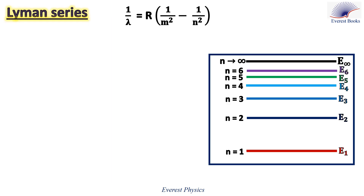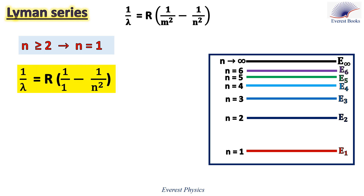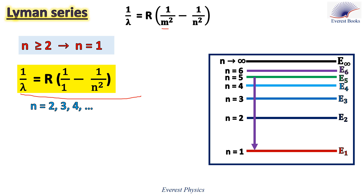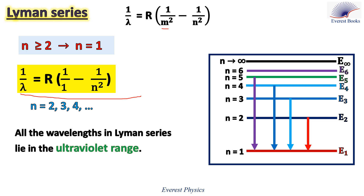Let's move to the Lyman series. The Lyman series is the set of spectral lines discovered between 1906 and 1914, which corresponds to downward transitions from the energy level of quantum number N ≥ 2 to the energy level of quantum number N = 1. So M is replaced by 1 in the Rydberg formula, and N could be 2, 3, 4, etc. Transitions from E5, E4, E3, and E2 all go down to E1. All the wavelengths in the Lyman series lie in the ultraviolet range, which are invisible to the human eye.